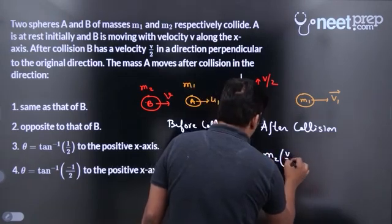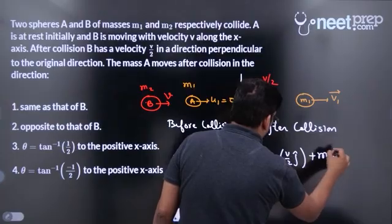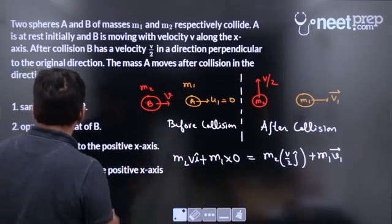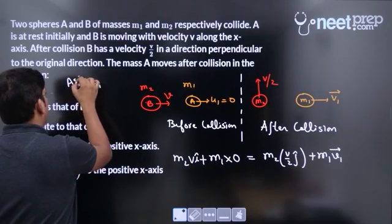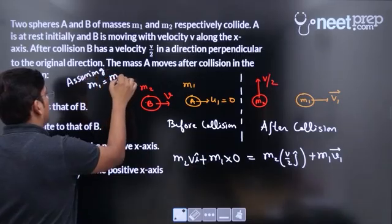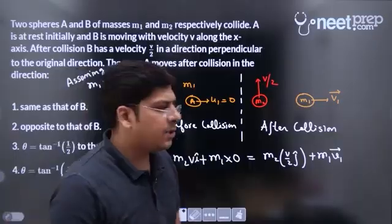This is m2 into v by 2 j cap plus m1 into v1. Obviously m1 and m2 should be same because in order to find the direction I am assuming m1 to be same, assuming that m1 and m2 are equal.